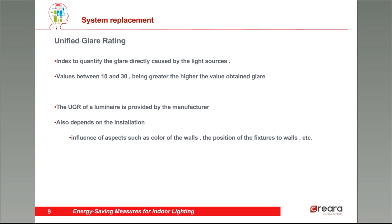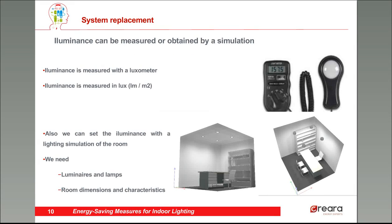The unified glare rating is the indicator to quantify the glare directly caused by the light sources. The values of this indicator are between 10 and 30 — the higher the value, the higher the glare of the luminaire. The UGR of a luminaire is always provided by the manufacturer, but it can change depending on the installation. The lighting level in a surface, or as we call it, the illuminance, can be measured or set with a simulation. We usually measure it with a luxometer, which is simple and cheap equipment, measuring in several points to establish the average illuminance in the room.